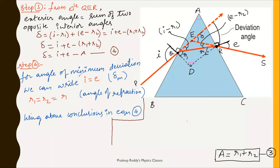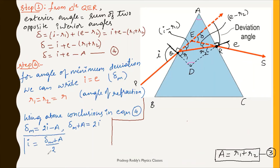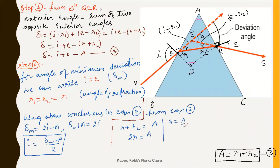Substituting these conclusions into equation four: delta minimum equals 2i minus A, so delta_m plus A equals 2i, giving angle of incidence i equals (delta_m plus A) divided by 2. From equation three, r1 plus r2 equals A, and since r1 equals r2 equals r, we get 2r equals A, so r equals A divided by 2.